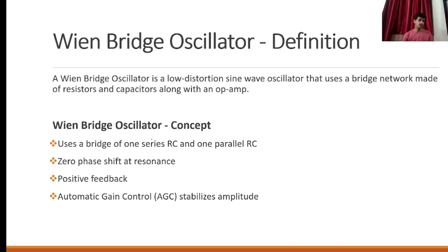In the RC phase shift oscillator, we use the inverting configuration of the operational amplifier. But in the Wien bridge oscillator, we use the non-inverting configuration of the operational amplifier. A Wien bridge oscillator is a low distortion sine wave oscillator that uses an RC network made of resistors and capacitors along with an operational amplifier. The concept uses one series RC and one parallel RC combination, zero phase shift at resonance, positive feedback, and automatic gain control (AGC) to stabilize amplitude.